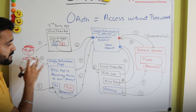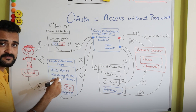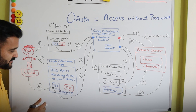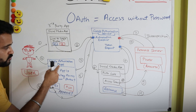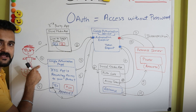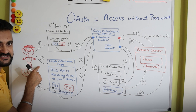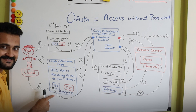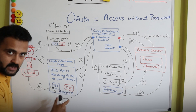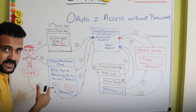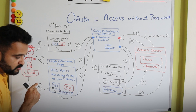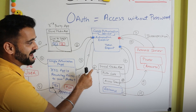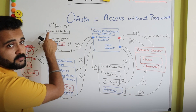The Google authorization server takes this request and then sends a page to the user asking: 'This XYZ app is asking for access to your photos — are you approving it?' At step three, this page is sent to the user who is asked for permission to allow access to the photos. At step five, the user again says yes and approves it. This step could also ask for login ID and password to authenticate the user. The moment the user approves, this request goes back to the authorization server.